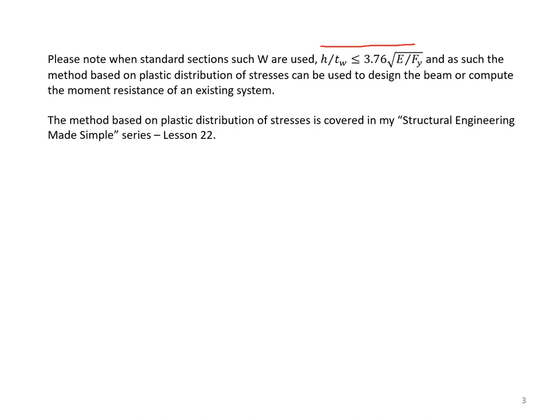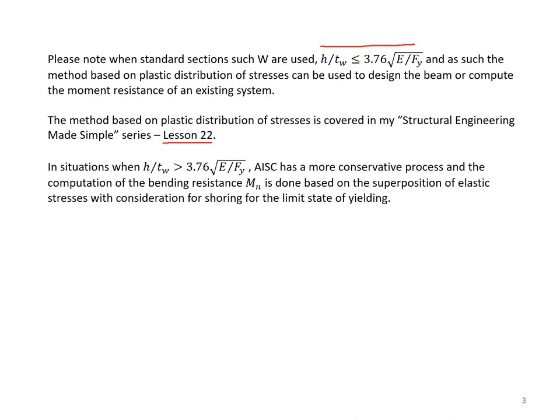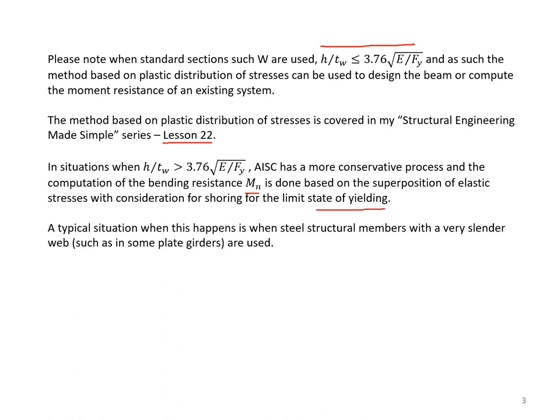The method based on plastic distribution of stresses is covered in my Structural Engineering Made Simple series, Lesson 22. In situations when H over TW exceeds 3.76 square root of E over Fy, AISC has a more conservative process and the computation of the bending resistance MN is done based on the superposition of elastic stresses with considerations for shoring for the limit state of yielding. A typical situation when this happens is when steel structural members with a very slender web, such as in some plate girders, are used.